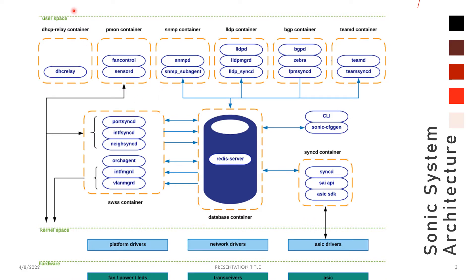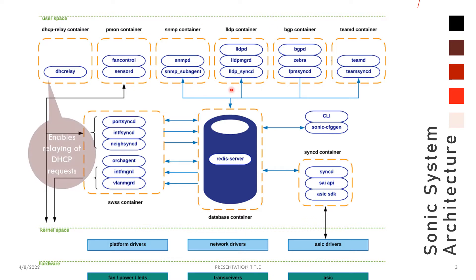As discussed, this is classified into user space, kernel space, and hardware. As you can see, there are more components in the user space. We will now see how each container works — all of these are running as Docker containers. Once the system is up, you can see these containers separately.